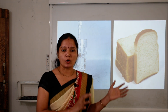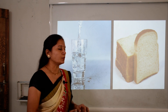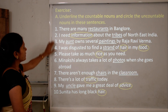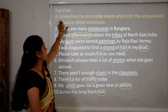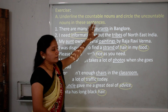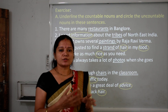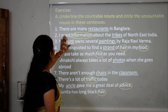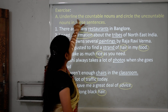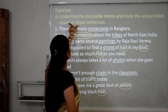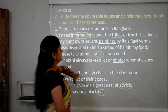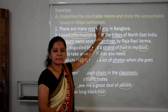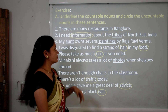So I hope the concept of countable and uncountable nouns is clear to you. Now let's move to the exercises. Exercise A: underline the countable nouns and circle the uncountable nouns in these sentences.